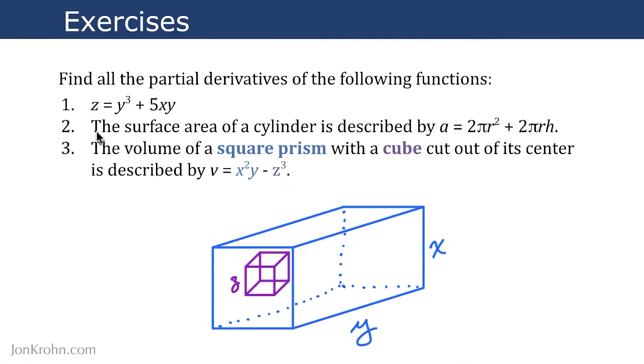For exercise two, we've got the surface area of a cylinder. We've got the function for that, which is a equals 2πr² plus 2πrh. So find all of the partial derivatives of that function.